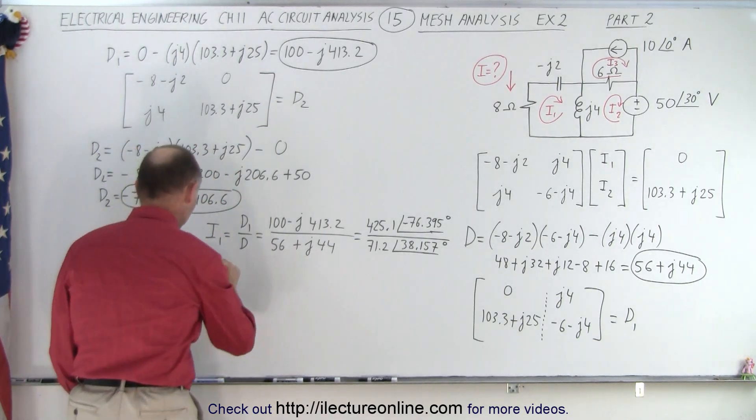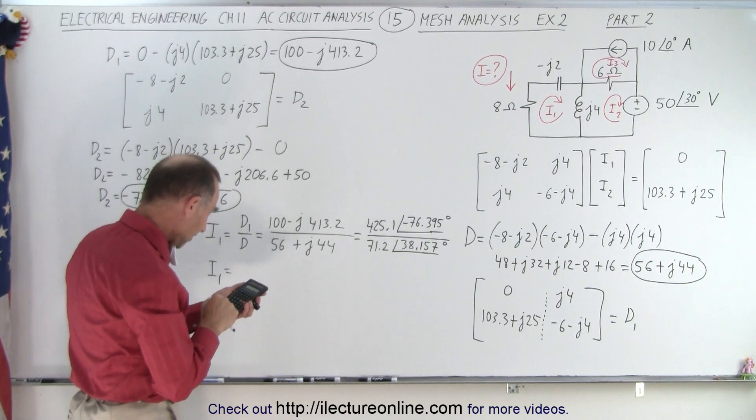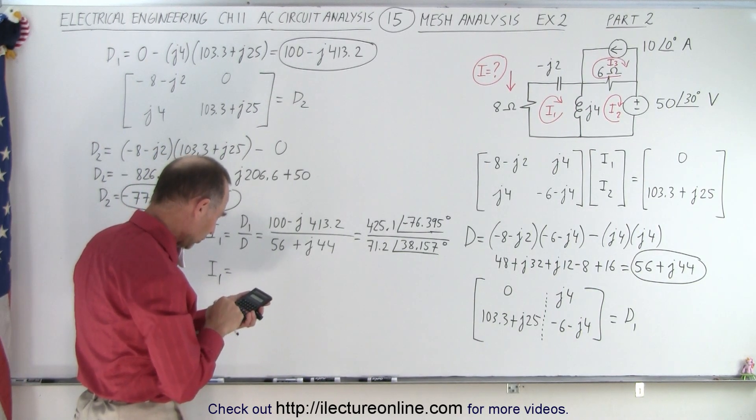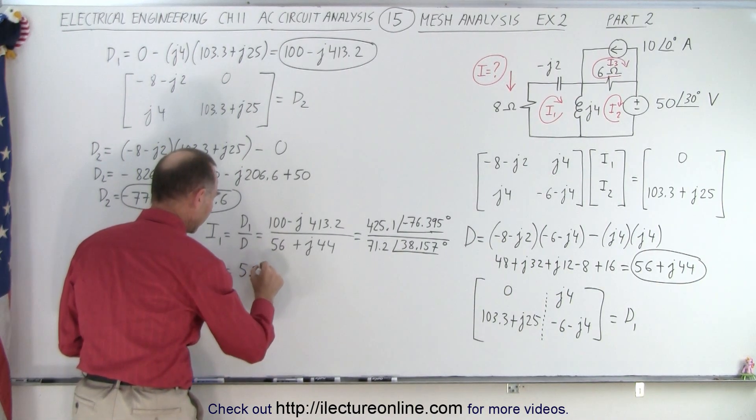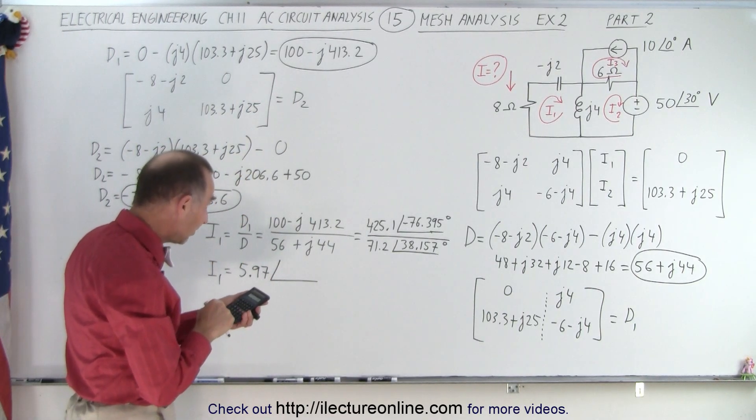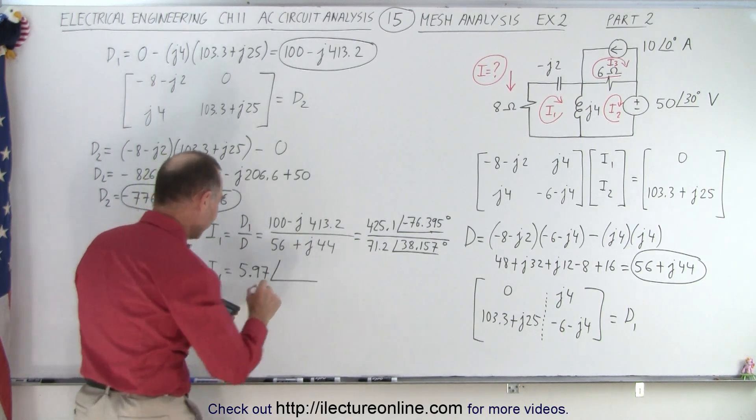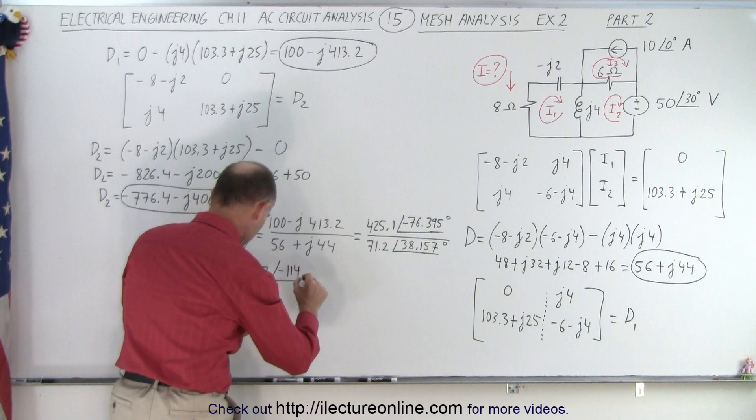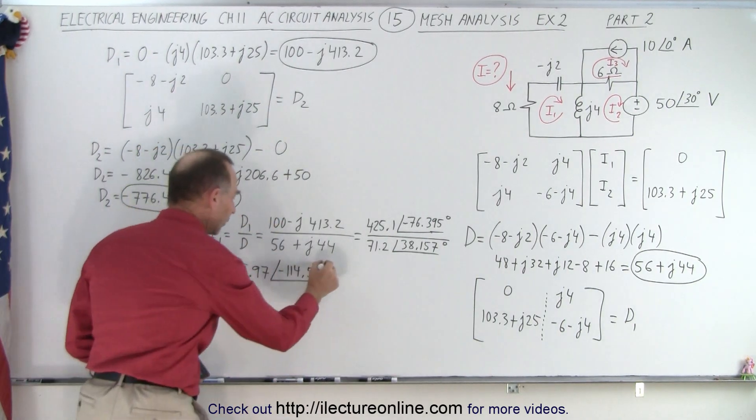Now we can go ahead and divide. So we have I1 is equal to 425.1 divided by 71.2. That gives us 5.97 with a phase angle of, so we have 76.395. That's a minus. Subtract from that, minus 38.157. That gives us a phase angle of minus 114.55 degrees.